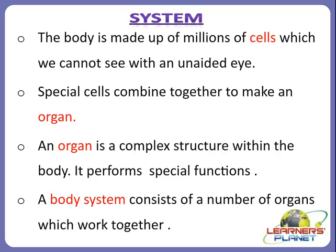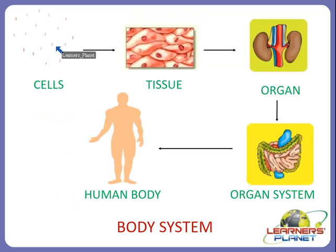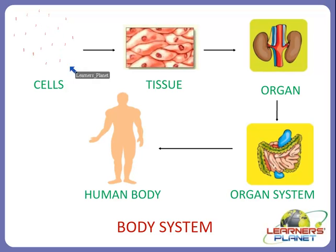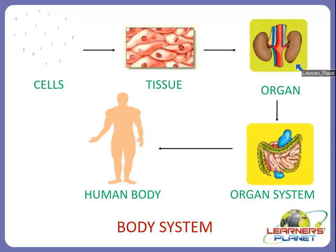Let us see some pictures to understand how this system is made. These are the tiny cells which we cannot see with a naked eye - we have to use a microscope. Many millions of cells combine together to form a tissue. There are many kinds of tissues present in our body, and many such tissues combine together to form an organ.